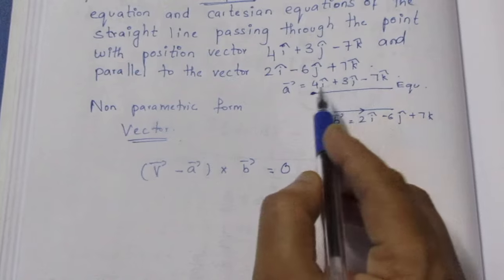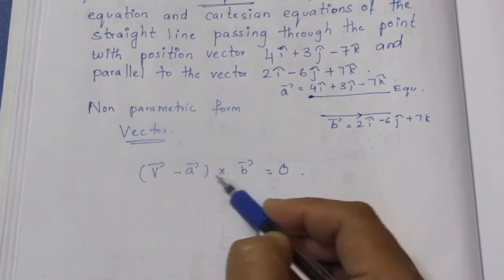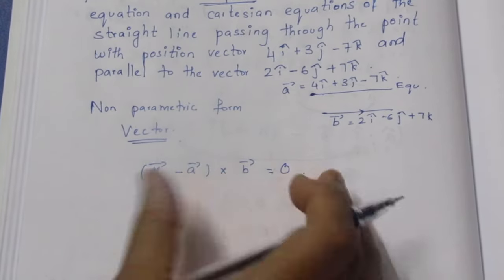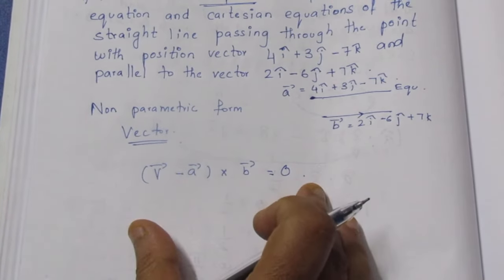This is A, you know. Pass the point is A, B is parallel to B. If we solve this problem, we can solve this problem. Equations can be solved.